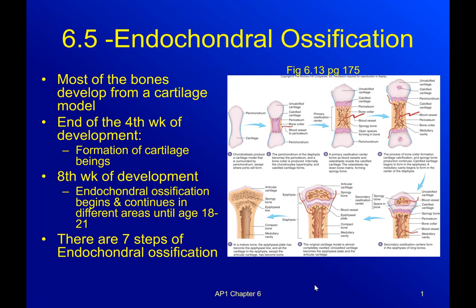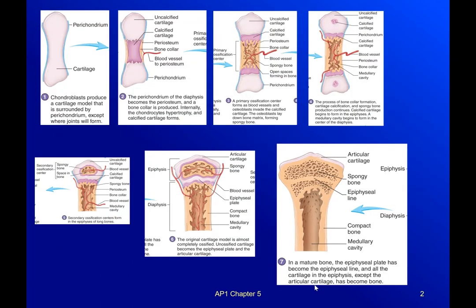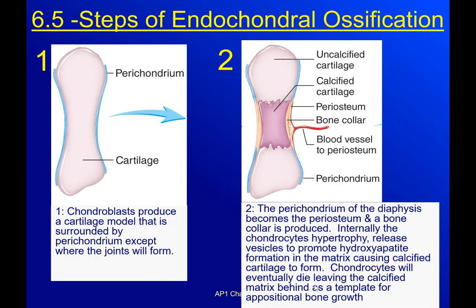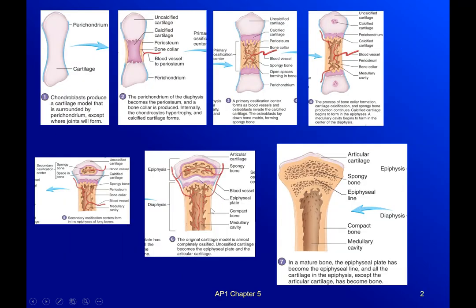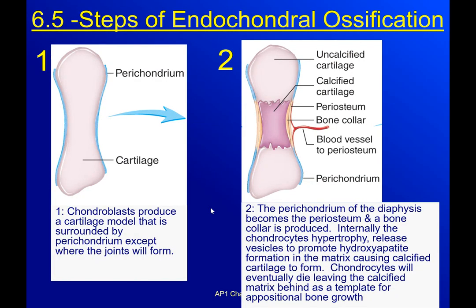At the eighth week of development — the second month — your endochondral ossification begins and continues in different areas literally until the age of 18 to 21, so until you are completely an adult. There are seven steps which you can see here, and we're going through literally these seven steps.